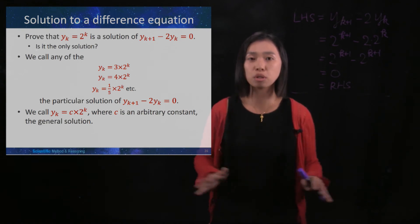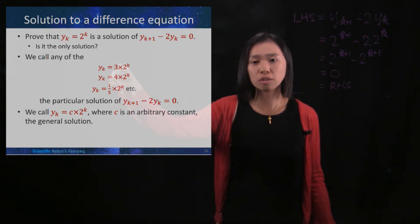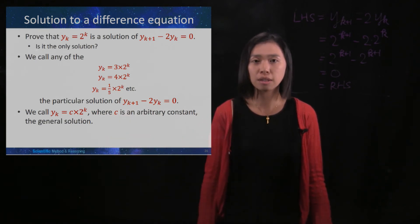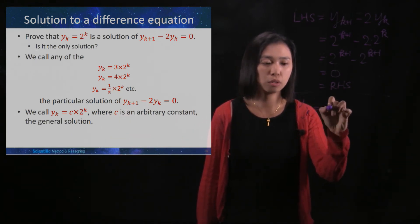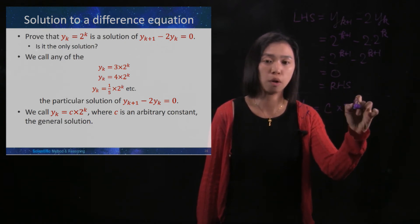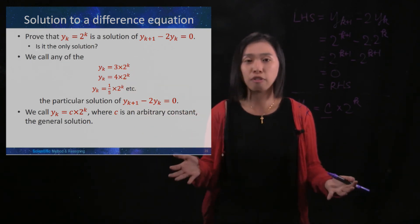But then in examinations, it is impossible to write down every single answer, right? You know that there are so many answers. So it's impossible to write down all of these. And then what would people do? So people would write down yk is equal to c times 2 to the power of k. And then c is arbitrary constant, which could be replaced with anything.